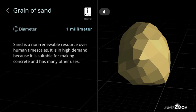Grain of sand, diameter: 1 millimeter. Sand is a non-renewable resource over human timescales. It is in high demand because it is suitable for making concrete and has many other uses.